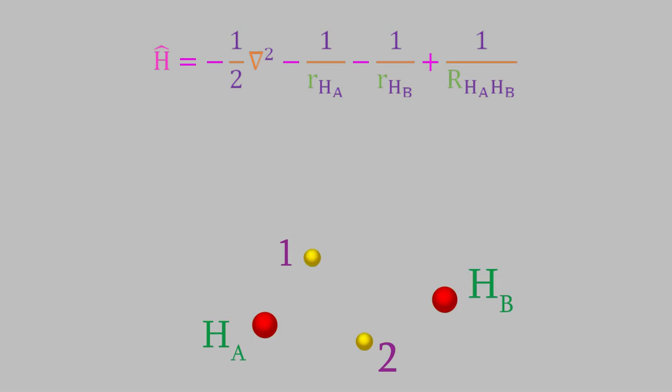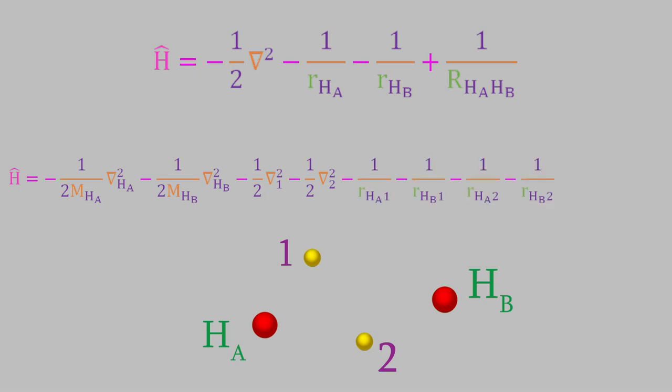The Hamiltonian for H2 is very similar to the one for the H2 plus ion. There are two hydrogen nuclei, so there are two kinetic energy terms for the nuclei. There are also two electrons, so there are two kinetic energy terms for those. Next are terms for the attractions between the nuclei and the electrons. Since there are two of each, there are a total of four terms. The subscripts on r tell us which electron and nucleus the term accounts for. Finally, there is a term for the repulsion between the two nuclei, and another for the repulsion between the two electrons.